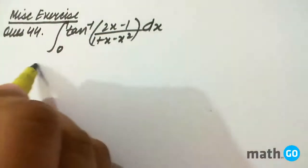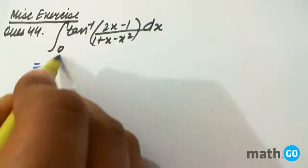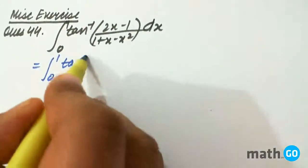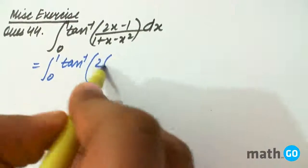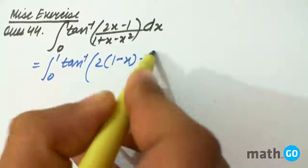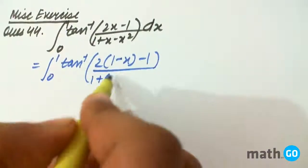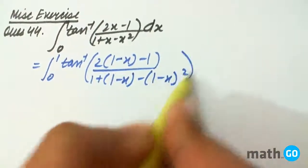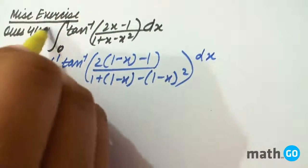We will simply put x to 1-x as per property of definite integration. So (1-x-1)/(1+(1-x)-(1-x)²) dx. This is equal to 0 to 1 tan inverse...